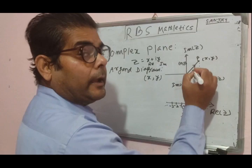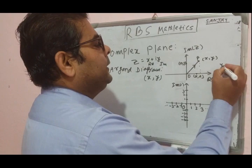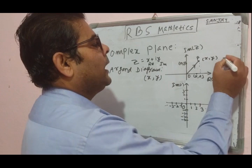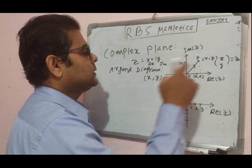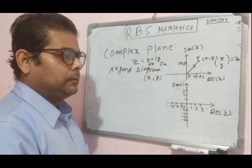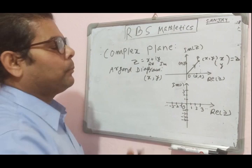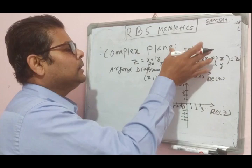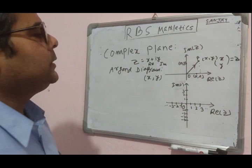Joining the origin O to point P gives line OP, which represents a vector with y as the imaginary component and x as the real component. You can represent the complex number z by the vector (x, y). The plane constituted by the real axis and imaginary axis is the complex plane.